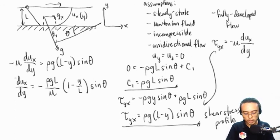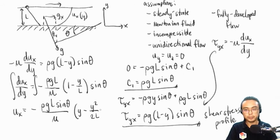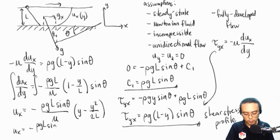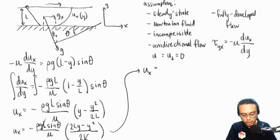At this point, we can integrate again to get the velocity profile. Integrating, u sub x equals negative rho g l sine theta over mu times the quantity y minus y-squared over 2l, plus an integration constant. Simplifying with a common denominator of 2l, this becomes u sub x equals negative rho g l sine theta over mu times (2ly minus y-squared) over 2l. After the l cancels, we are left with u sub x equals negative rho g sine theta over 2 mu times (2ly minus y-squared). This is our velocity profile for a fluid flowing down an inclined plane.